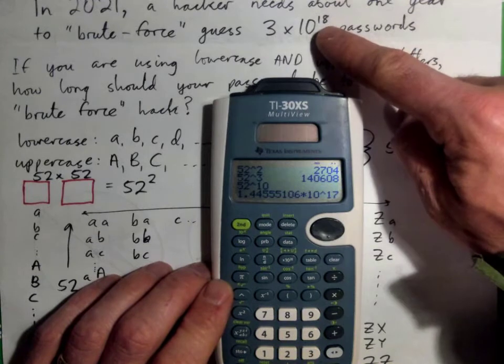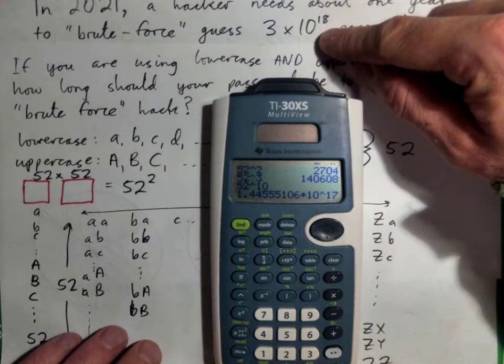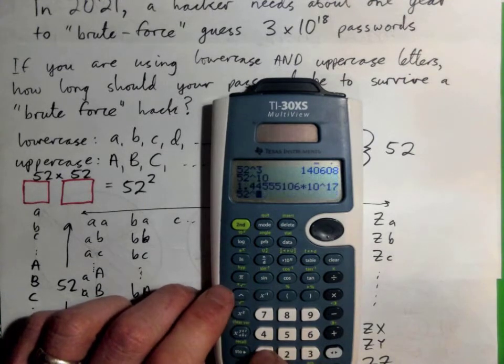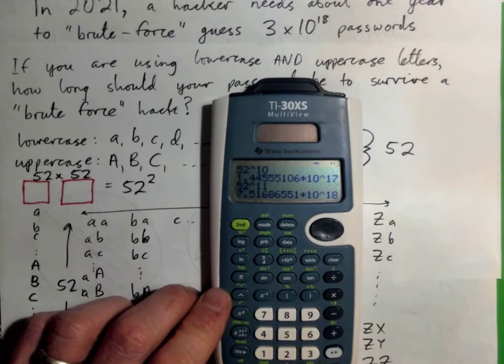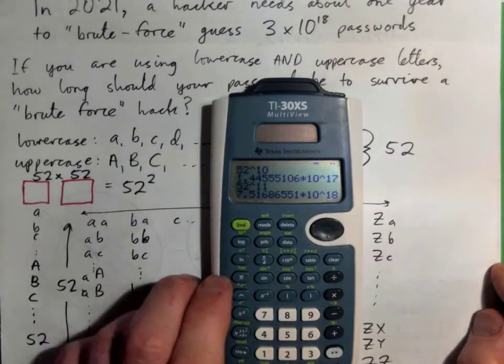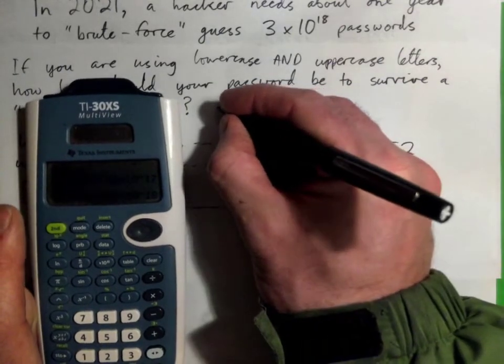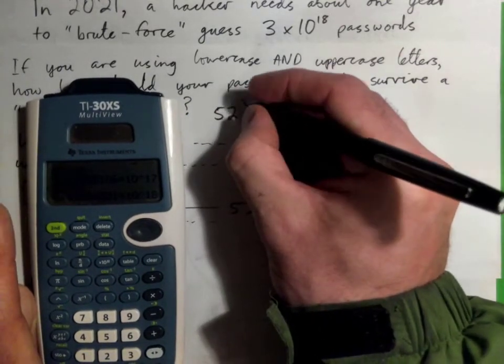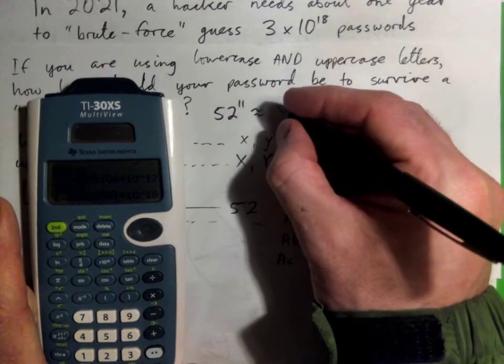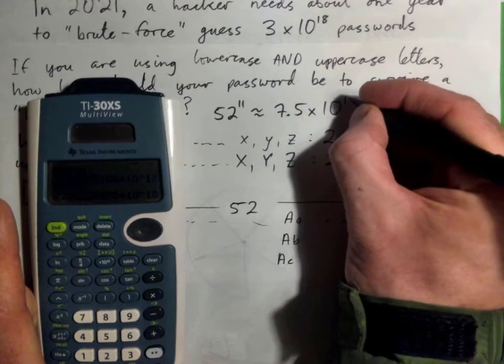So isn't that a little bit less than this number? A little bit less than this number, right? So let's try 52 to the power of 11. And now we've just got to 7.5 times 10 to the power of 18. So what we find just by playing around is that 52 to the power of 11 is about 7.5 times 10